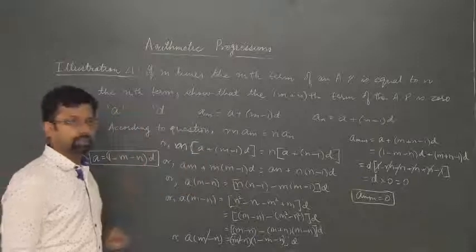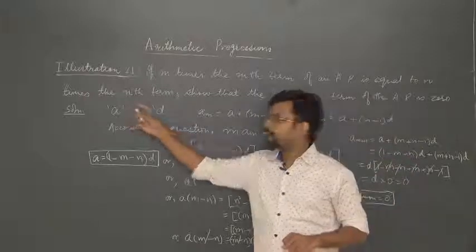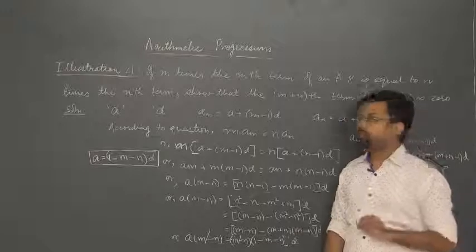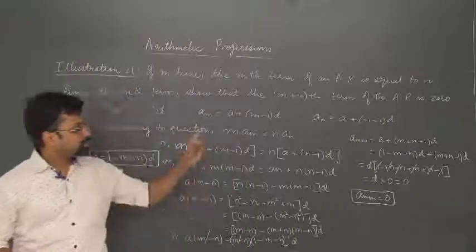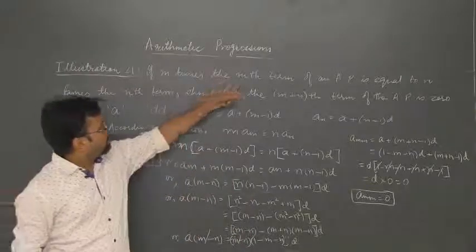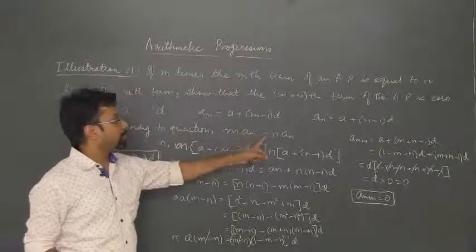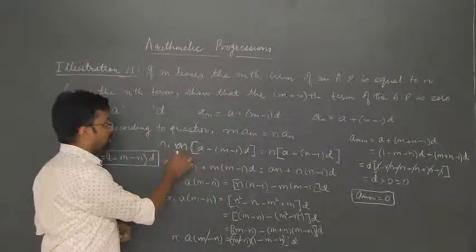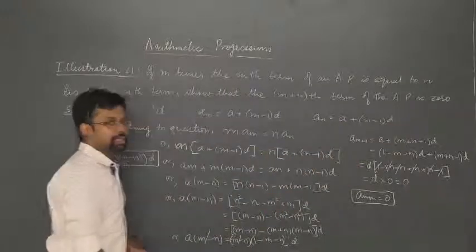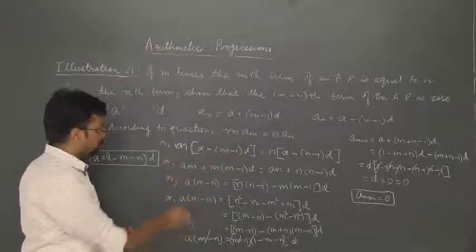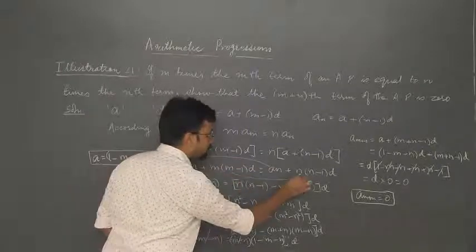To recap: the first term and common difference were not given, so we assumed them to be a and d. The mth term is a plus (m minus 1) into d and the nth term is a plus (n minus 1) into d. According to the question, m times the mth term equals n times the nth term, so m into a_m equals n into a_n. We substitute the values of a_m and a_n, write it down, and open the brackets to get terms with a and terms with d.